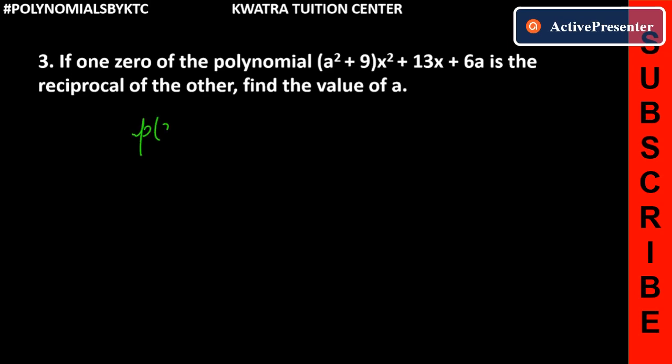So, what do we have in this polynomial? First, we need to see that it is (a² + 9)x², then we have 13x, then we have 6a. Now, you have to see that you have an a value according to this given condition, b value, and c value.